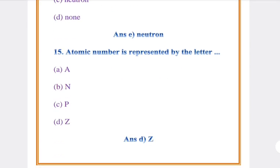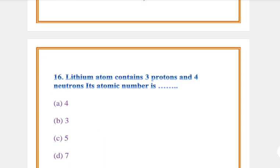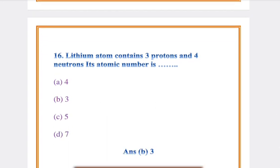Question number 15: Atomic number is represented by the letter? Answer: D, Z. Question number 16: Lithium atom contains 3 protons and 4 neutrons. Its atomic number is? Answer: B, 3.